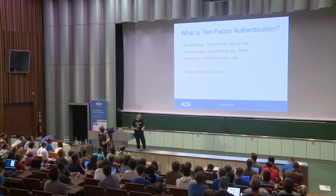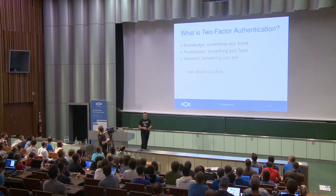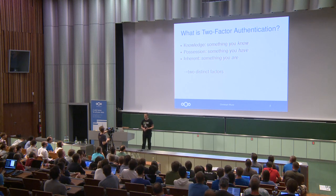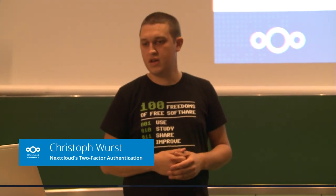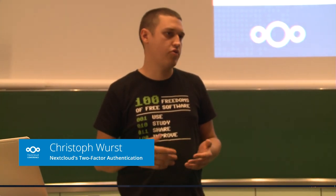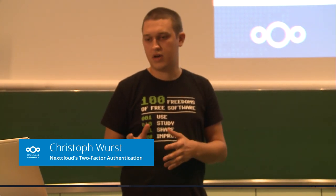So what is two-factor authentication? When you authenticate on a system you basically have three possibilities to prove your identity. The first one is something that you know, which we have on almost all systems. The second one is something that you have, like some device or some special hardware.